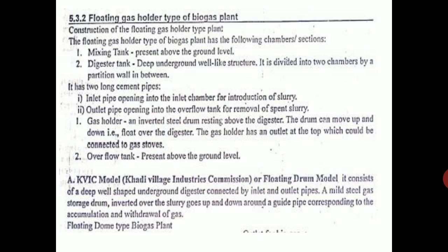This is known as the KVIC model — Khadi and Village Industries Corporation — or the floating drum model. It consists of a deep well-shaped underground digester connected by inlet and outlet pipes, and a mild steel gas storage drum inverted over the slurry that goes up and down around a guide pipe. The guide pipe in the center prevents the drum from wobbling and guides its vertical movement. As gas fills, the drum goes up; as gas is used, the drum comes down — visible from a distance.